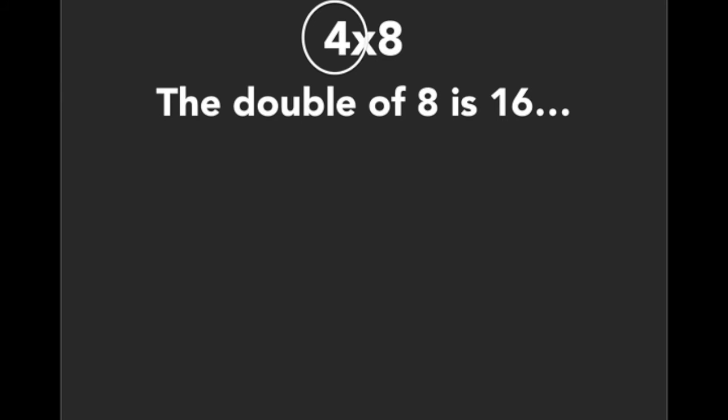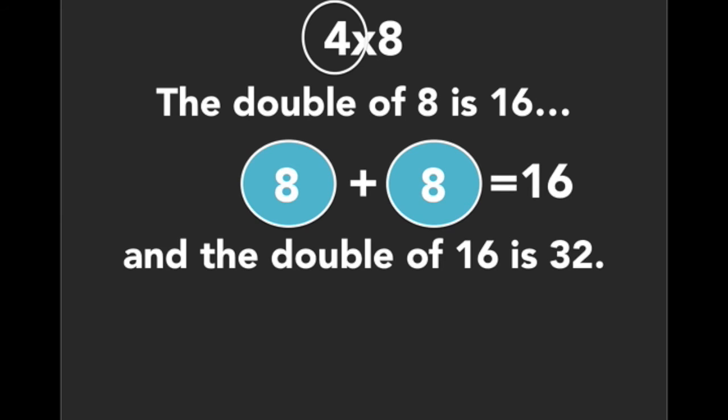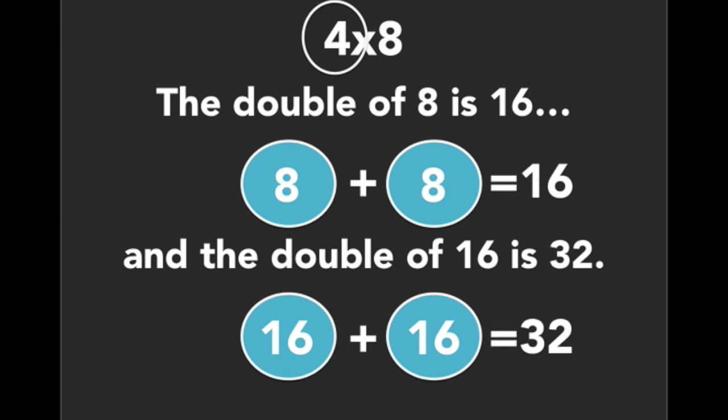Let's look at another one: 4×8. First, identify that we have a 4 in the equation, which means we can use the double the double strategy. We are going to be doubling the other number, not the 4. In this case, the double of 8 is 16. I encourage you to make this very visual for your students when you're teaching this strategy. The double of 8 is 16, and now we double the 16 to make 32.